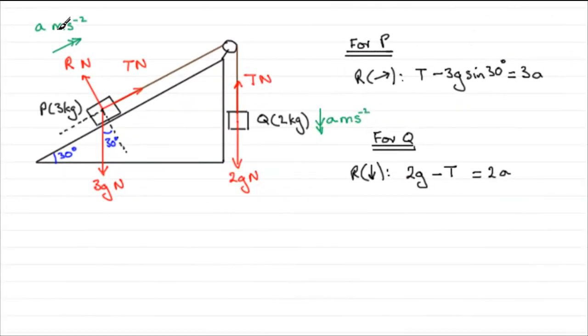Now in this next part what we've got to do is find the acceleration A. We've got our two equations of motion that we got from the first part of the question and we can solve these simultaneously then to find the acceleration A.